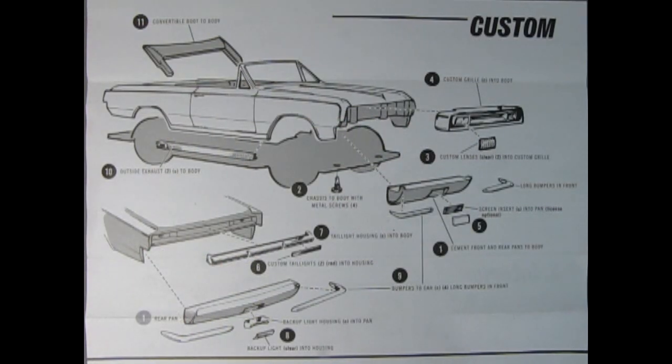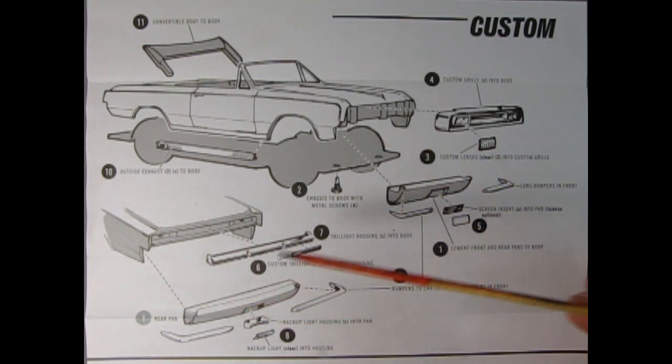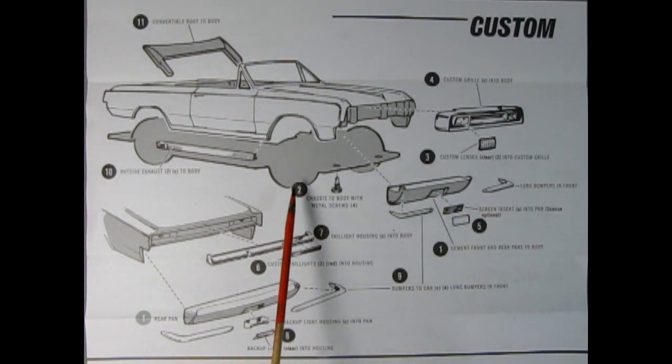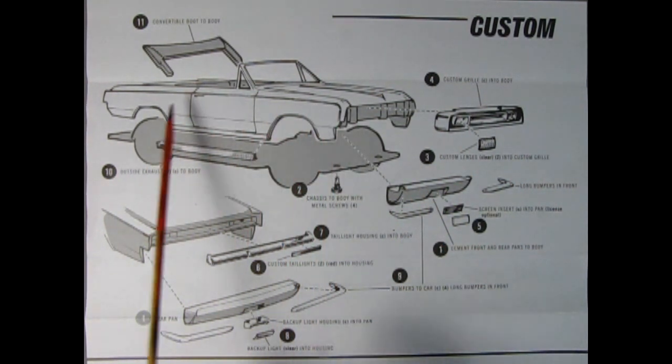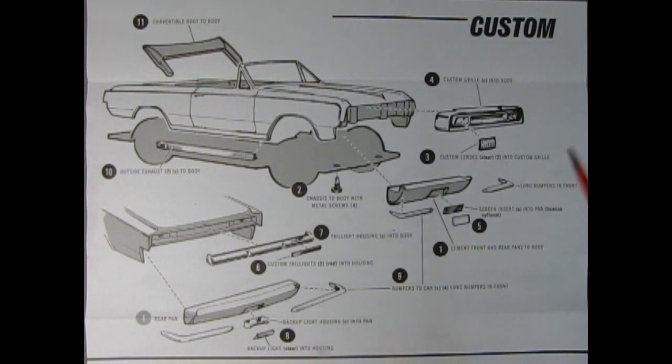If you prefer to build this model as the custom, here's the instructions on how to do that. So first off, you're going to add on your roll pans by gluing them to the body in the front, as well as up into the rear. Next up, you're going to take the chassis and attach it to the body with the four mounting screws.